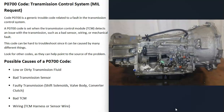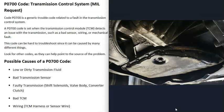The first thing to do when you get a P0700 code is to check to see if there are any other codes, because if there are, that's going to point you to what the problem is. One thing to note is that a P0700 code can be caused by many different things, so it can be kind of difficult to troubleshoot. Keep that in mind.